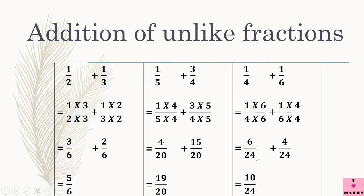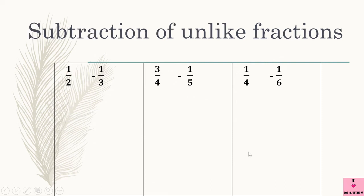Now let us move to subtraction of unlike fractions. The method is exactly the same as addition — the only difference is in the last step. Instead of adding, we have to subtract. Let's start: 1 upon 2 minus 1 upon 3.